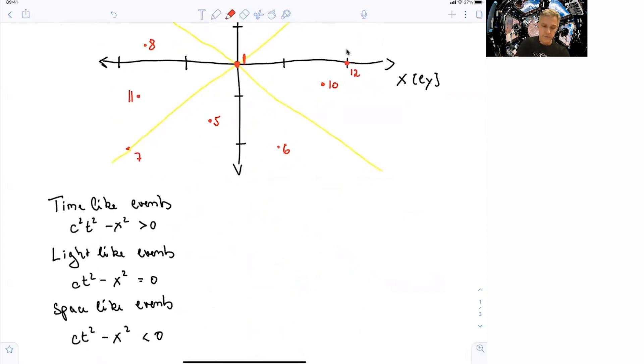As time-like, we define those events, where c squared t squared minus x squared is greater than 0. Light-like are those which are like light in a worldline. c squared t squared minus x squared equal to 0. And space-like, those where c squared t squared minus x squared is smaller than 0.